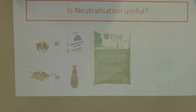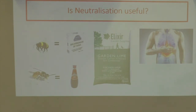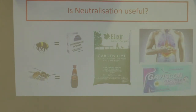The everyday example we're investigating today is what happens when you have too much acid in your body. Eating something very acidic can cause a lot of acid in your stomach, leading to heartburn, stomach pains, or indigestion. You can take indigestion remedies like Gaviscon, which is alkaline, and it neutralizes the acid in your stomach.